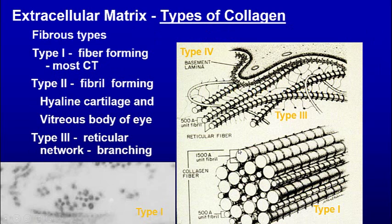There are different types of collagen. Type one is the main one — fiber-forming with periodicity and varied size. There's also type two, which is fiber-forming and found in hyaline cartilage and the vitreous body of the eye. Then there's type three, which is a reticular fiber — and that's branched.